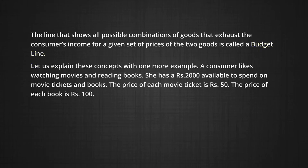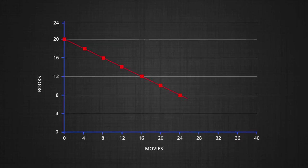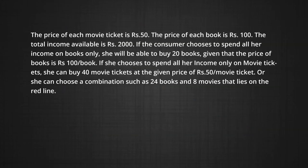Let us explain these concepts with one more example. A consumer likes watching movies and reading books. She has 2,000 rupees available to spend on movie tickets and books. The price of each movie ticket is rupees 50 and the price of each book is rupees 100. In this case, movie tickets are shown on the x-axis and books on the y-axis. If the consumer chooses to spend all her income on books only, she will be able to buy 20 books. If she chooses to spend all her income only on movie tickets, she can buy at most 40 movie tickets.